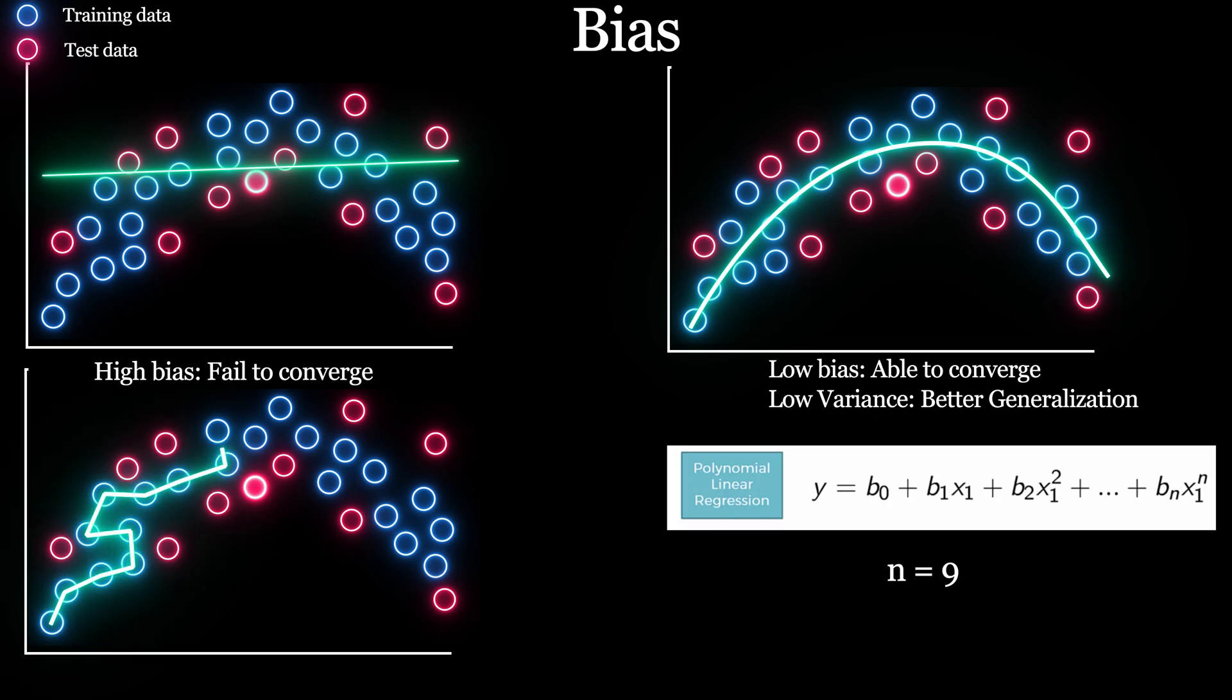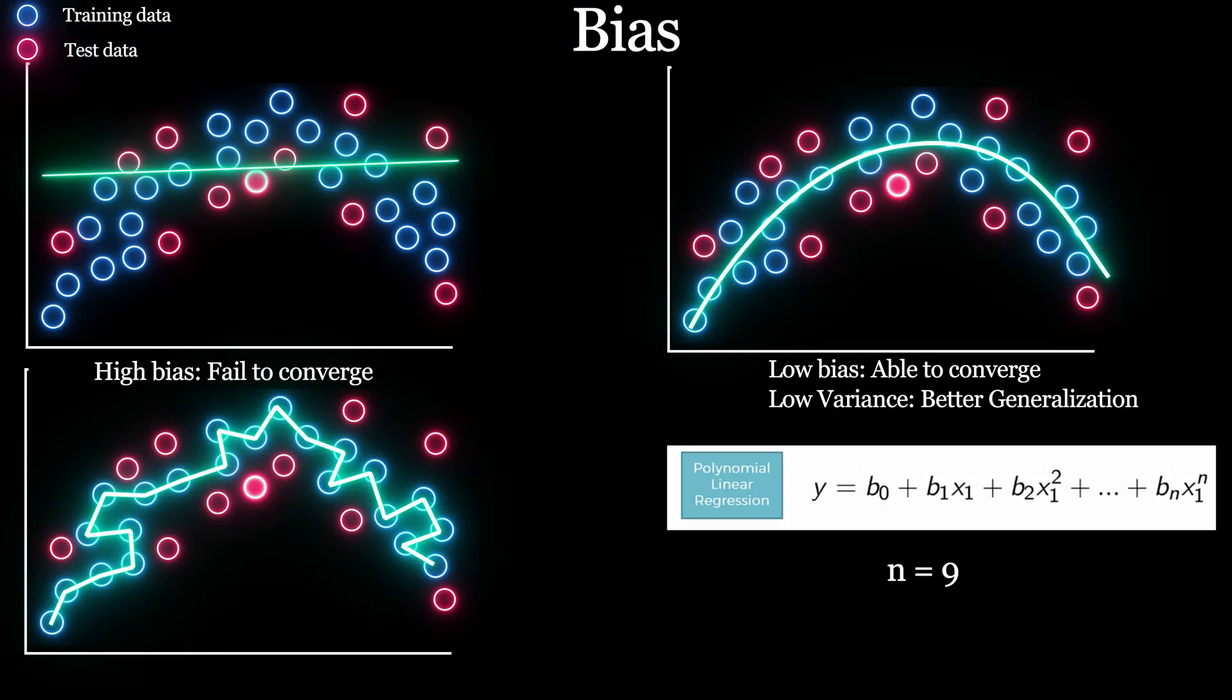The model will start capturing every single detail including noise and become overfit on training dataset and not be able to generalize on new or unseen dataset. Now this type of model has something called high variance.